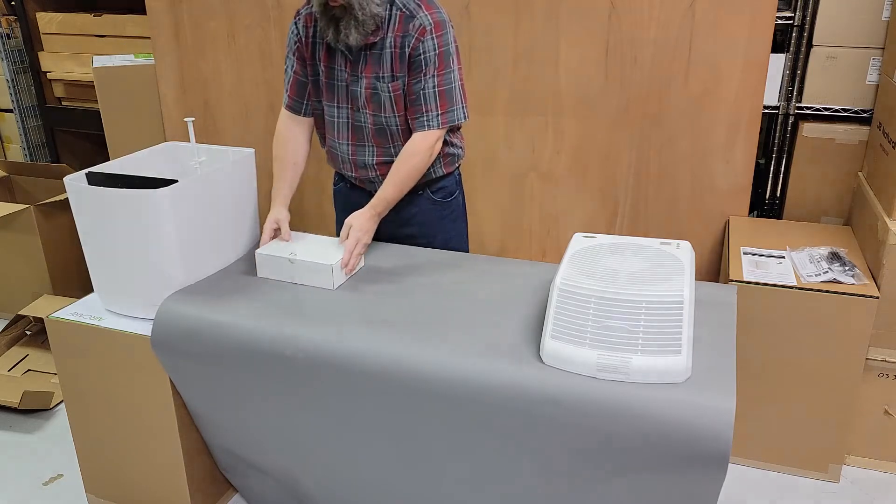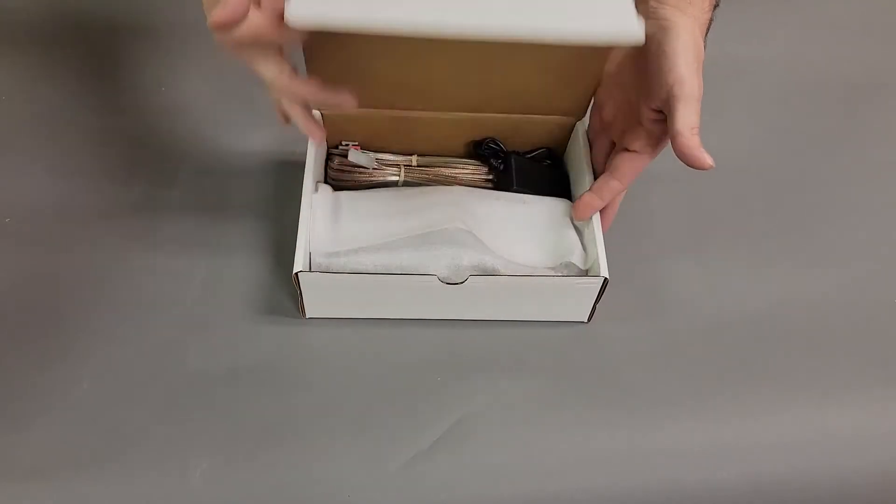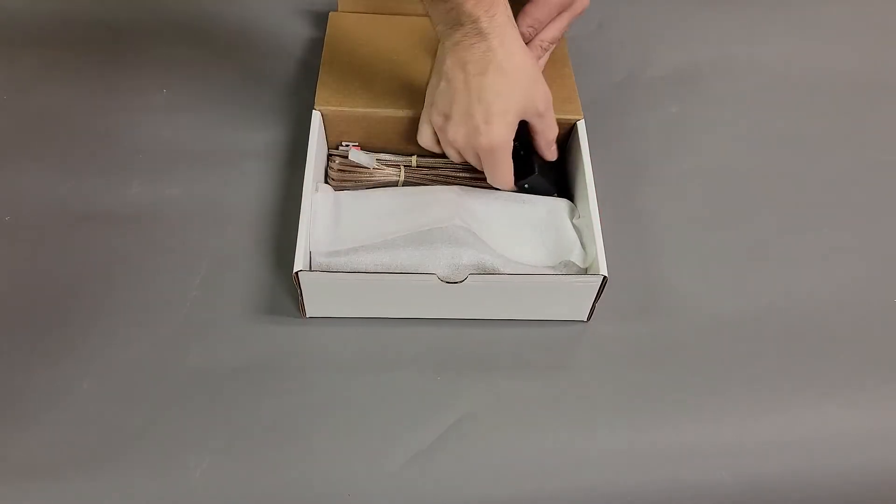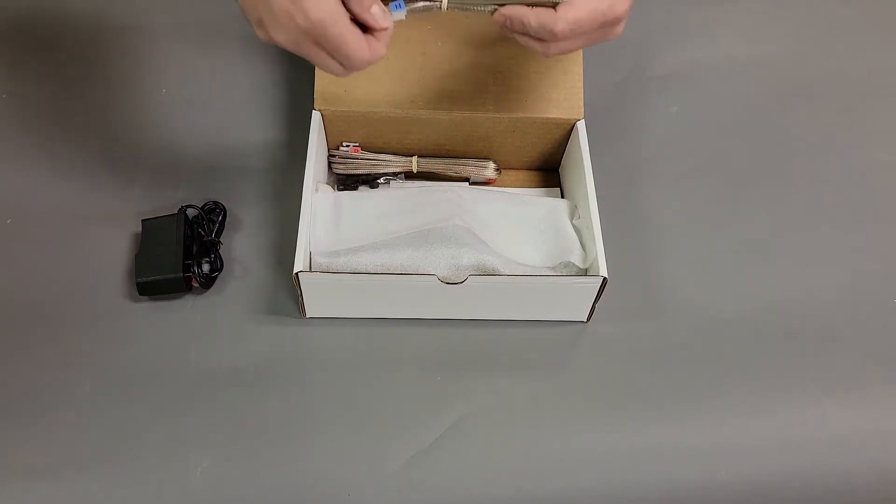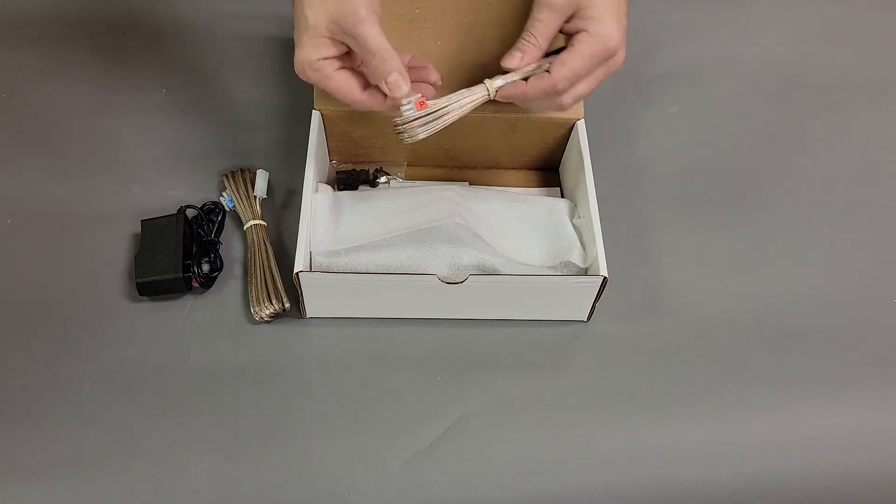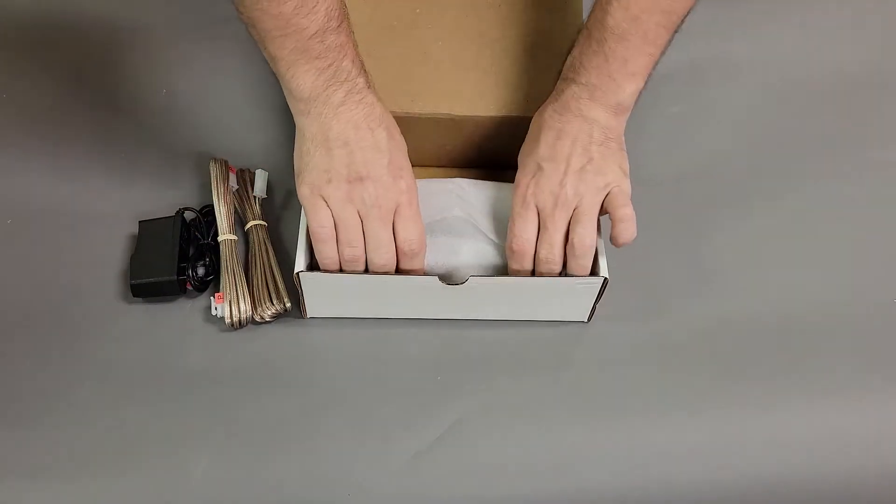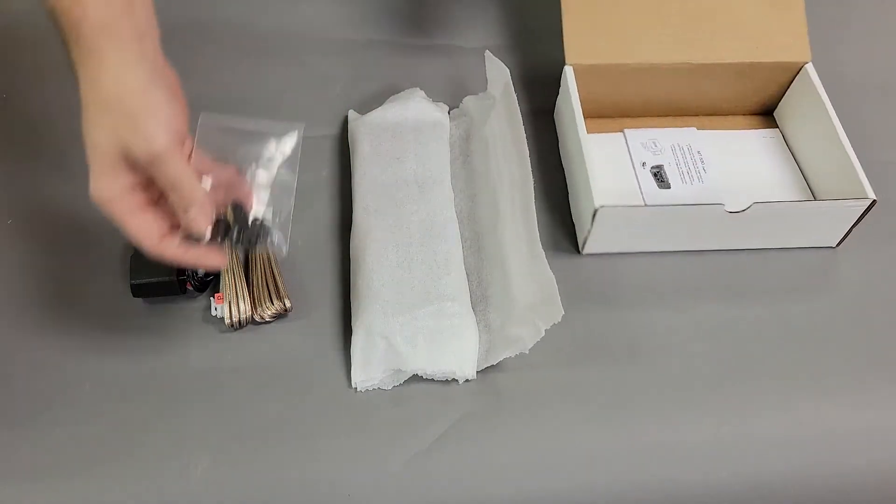Inside the white box you will find the heart of this system. Starting with the 1 amp power supply. Next will be the humidification connecting cable with blue H's. Then the power extension cable with red P's. This is the actual control unit itself. And now we have the cable management bag.